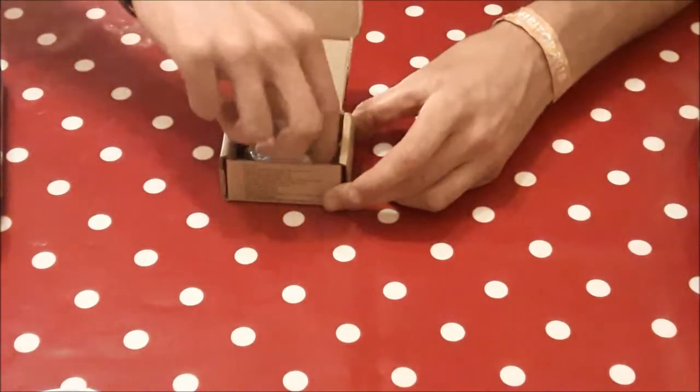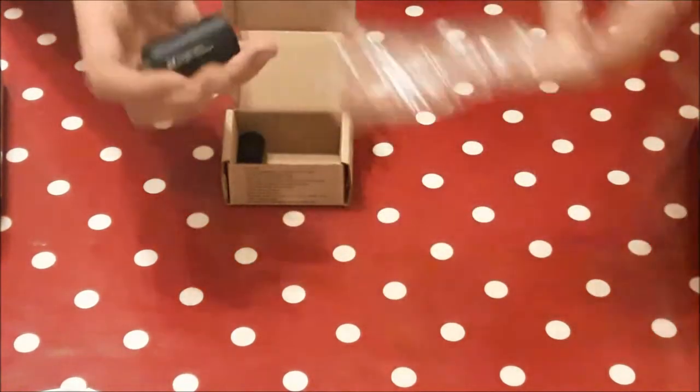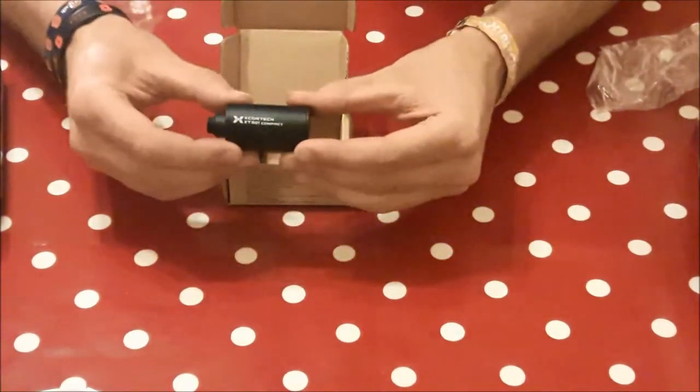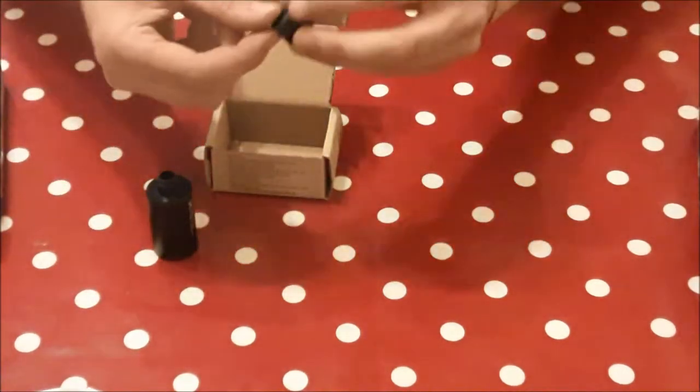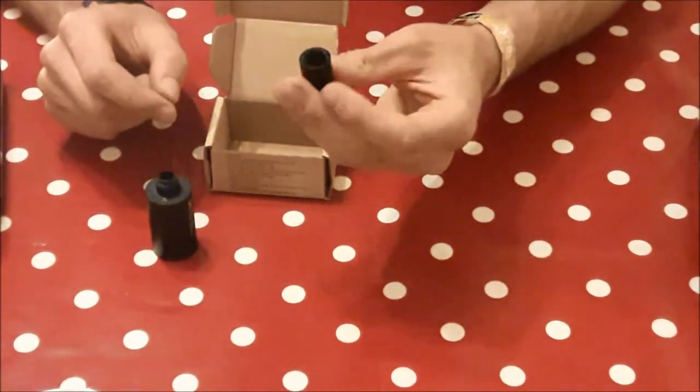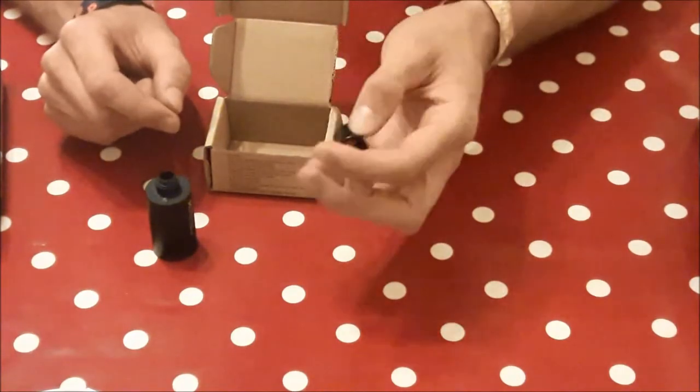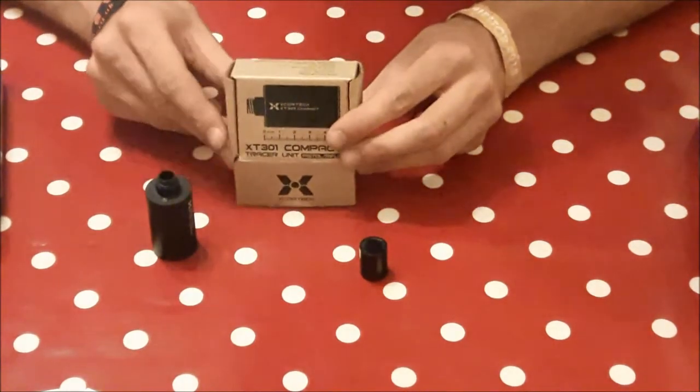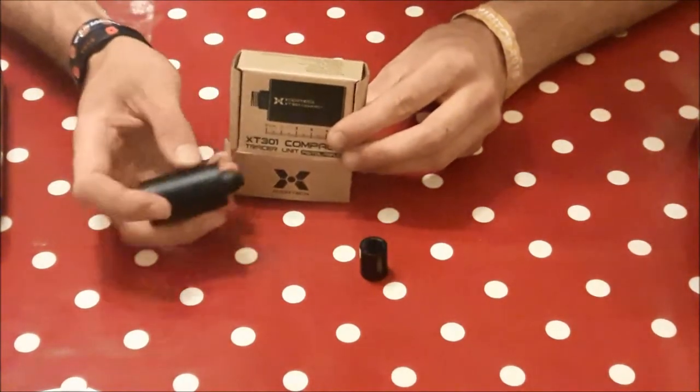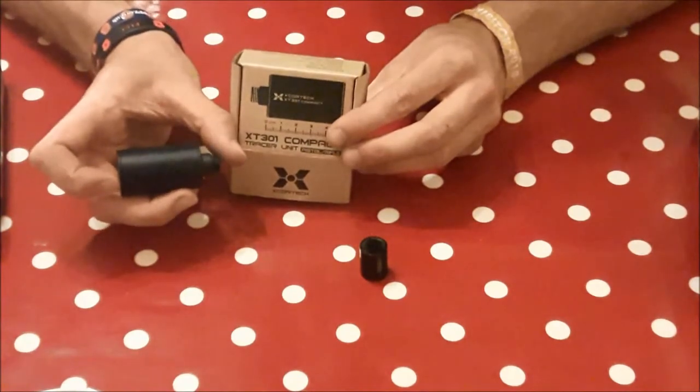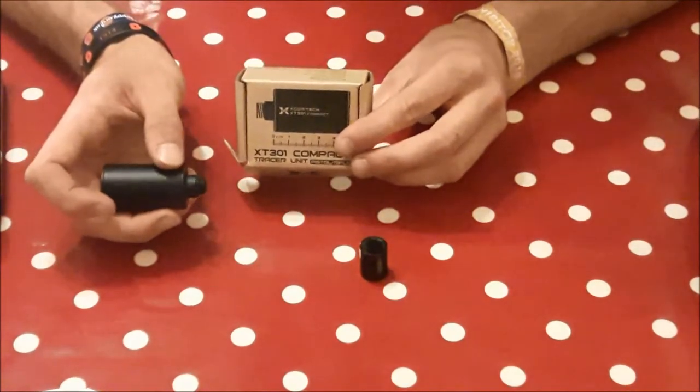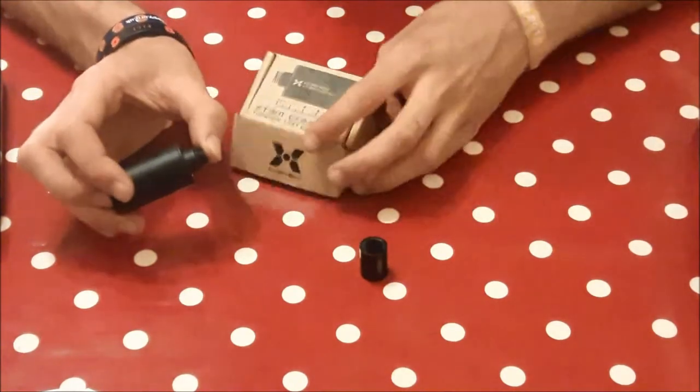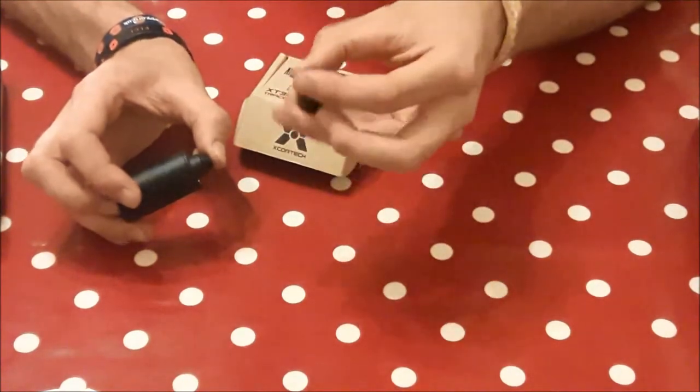Inside the box you get the tracer unit with Xcortec and what it is on the side, and you also get an adapter for 40mm counterclockwise threads. On the box it says the diameter is 29mm, the length is 60mm so that will be total length, the thread is 11mm clockwise, it's 41g, it's made of aluminum and as I said there's a 14mm counterclockwise adapter for it.